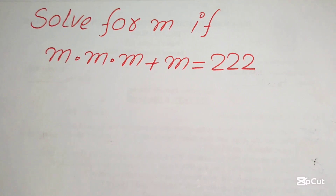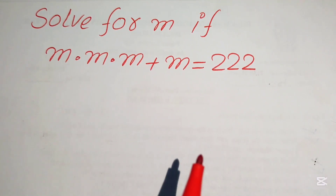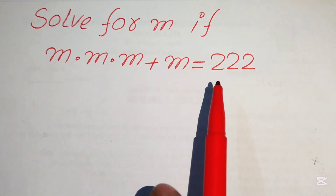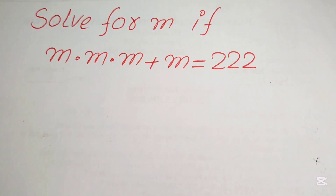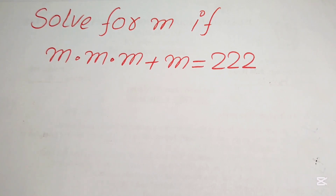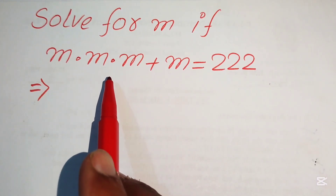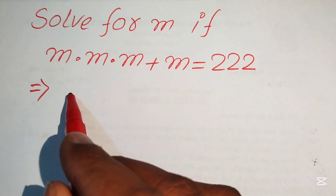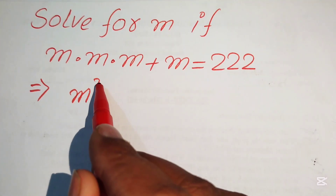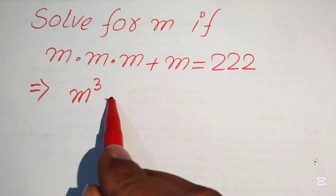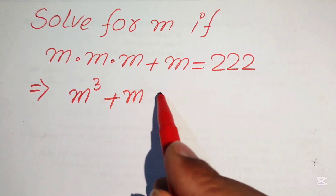Hello everyone, welcome. We have the algebra problem m × m × m + m = 222, and we need to solve for all values of m. First, we write this in simplified form. Since m is multiplied three times, we write it as m cubed. So the equation becomes m³ + m = 222.